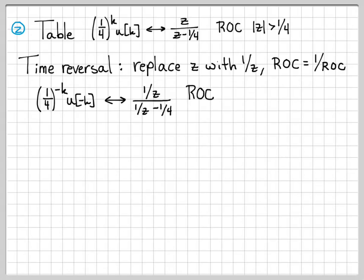In terms of the region of convergence, originally I had magnitude of Z greater than one-fourth. Now I'm going to have 1 over magnitude of Z greater than a fourth, which if I multiply both sides by four magnitude Z, I end up with magnitude of Z being less than four. So the region of convergence has completely changed because I've flipped the signal in the time domain. So the region of convergence has to change. So just do a little simplification. This actually simplifies, if you want to multiply things out, to minus four over Z minus four.